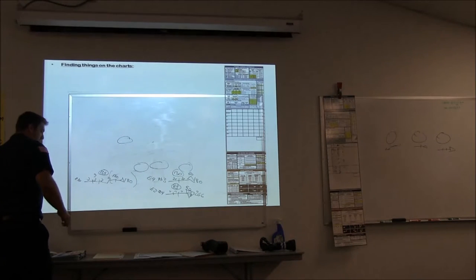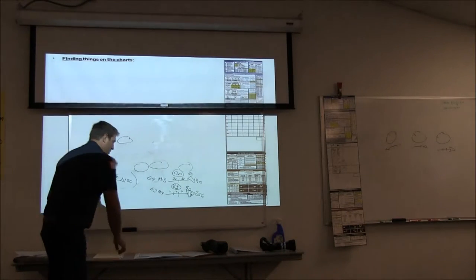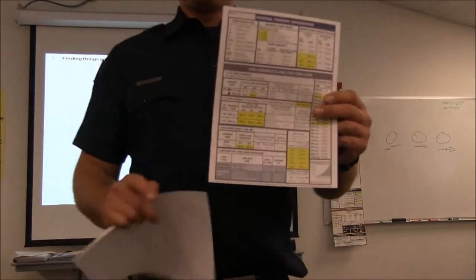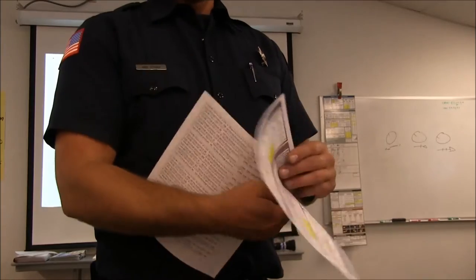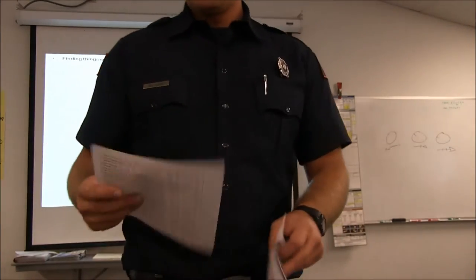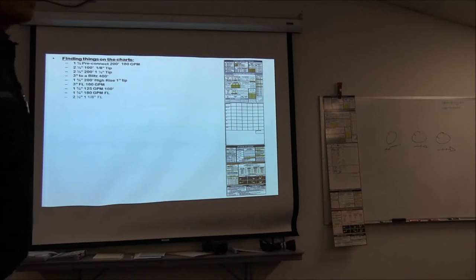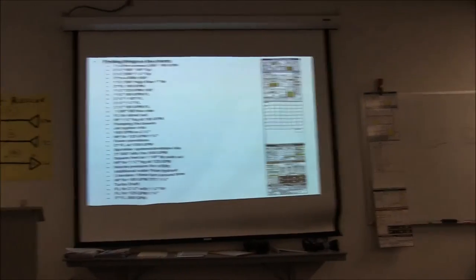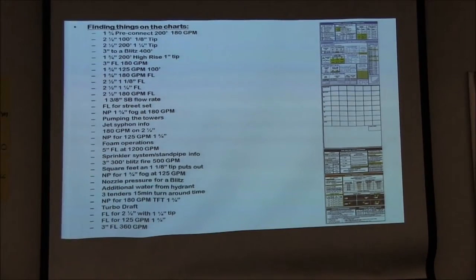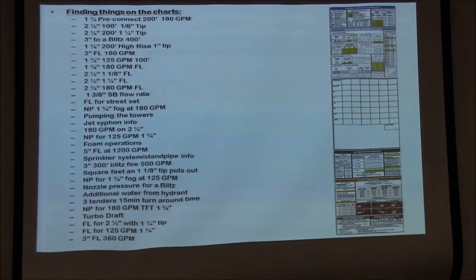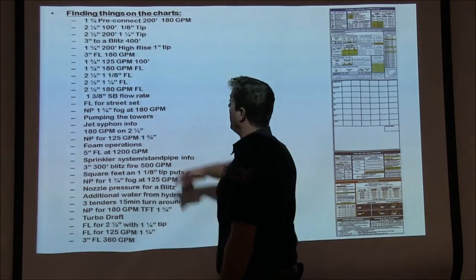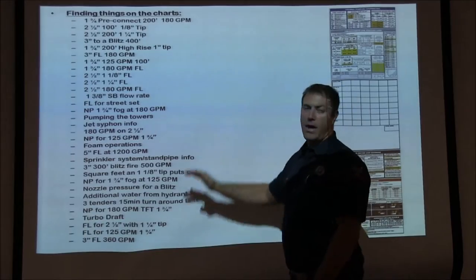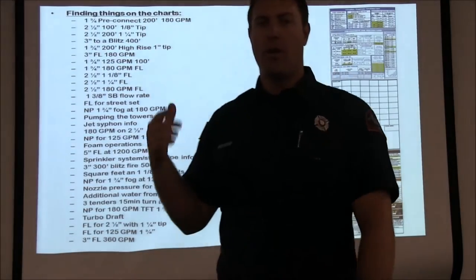For those doing this at home, we're providing two handouts available on Target Solutions: the front and back of the pump chart, and a handout with example pump problems. The first thing in this section is just finding things on the pump chart — don't do any math, just find them. On the inch-and-three-quarter pre-connect at 180 GPM, you're just going to point to it on the chart. Pause the video, find all those, then come back.